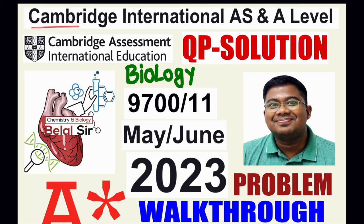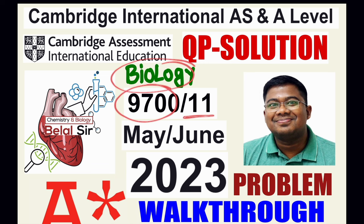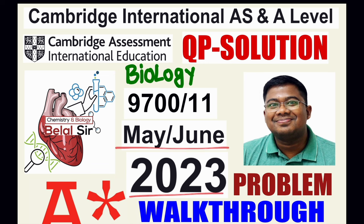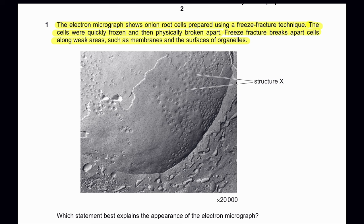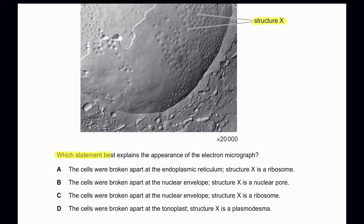Hi everyone, today we're going to be solving Cambridge International AS/A Level Biology 9700 Paper 11 May June 2023. The electron micrograph shows onion root cells prepared using a freeze fracture technique. The cells were quickly frozen and then physically broken apart. Freeze fracture breaks apart cells along weak areas such as membranes and surfaces of organelles. We are asked to label structure X, and the question asks which statement best explains the appearance of the electron micrograph.